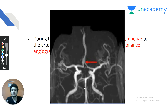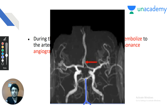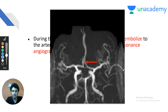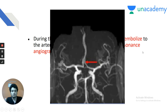The two vertebral arteries unite to form the basilar artery, which gives rise to the posterior cerebral artery. The posterior cerebral artery is interconnected to the internal carotid artery by the posterior communicating artery. A previous NEET question: which of the following is not a branch of the internal carotid artery? Options: anterior cerebral artery, middle cerebral artery, posterior communicating artery, posterior cerebral artery. Answer: posterior cerebral artery — it is a branch of the basilar artery. The affected artery on the MR angiogram is identified as the anterior cerebral artery.